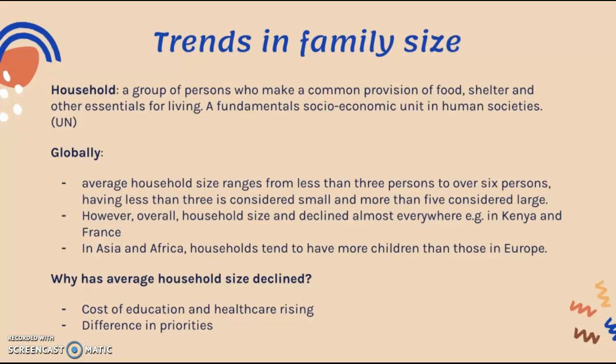Moving on to trends in family size — a household, or family, is basically a group of persons who make common provision for food, shelter, and other essentials for living. It is a fundamental socio-economic unit in human societies, according to the UN. Globally, the average household size ranges from less than three persons to over six persons. Having less than three is considered small, while having more than five is considered large. Overall, household size has declined almost everywhere.